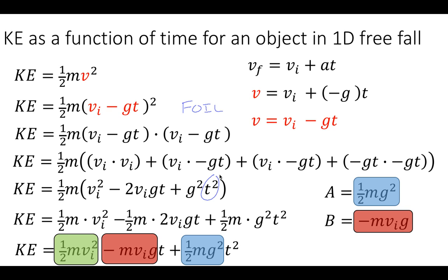And c is the constant that doesn't have any variable t. It should be noted that 1 half m v initial squared, that is just the initial kinetic energy.